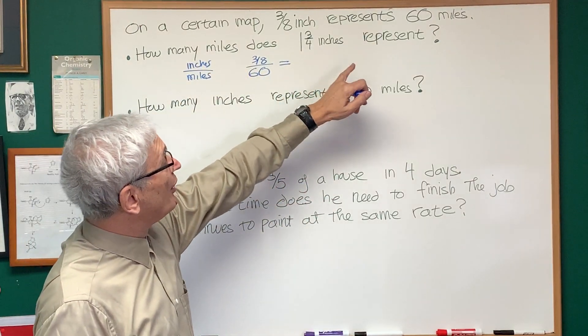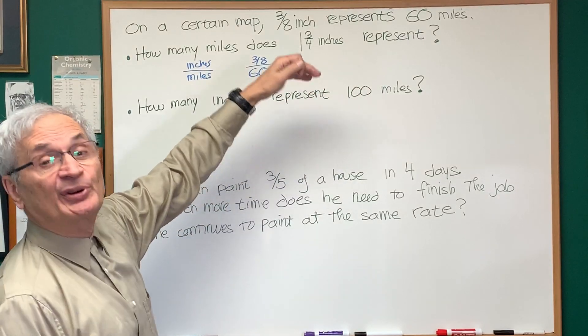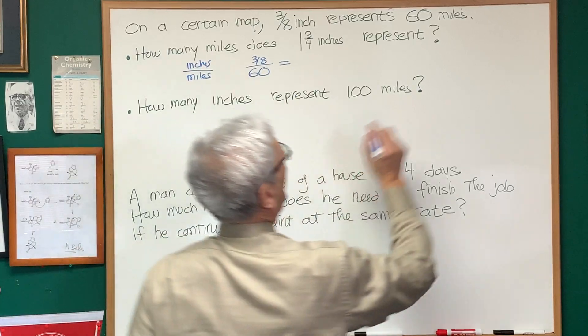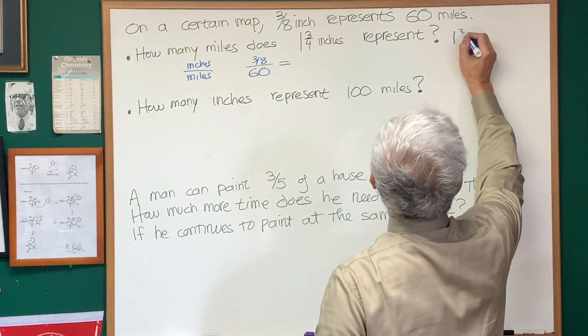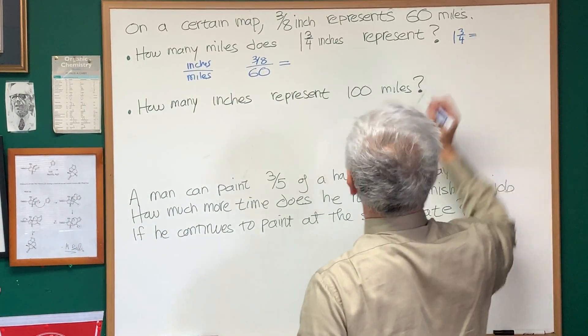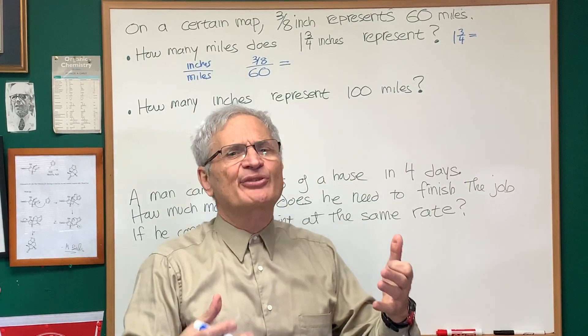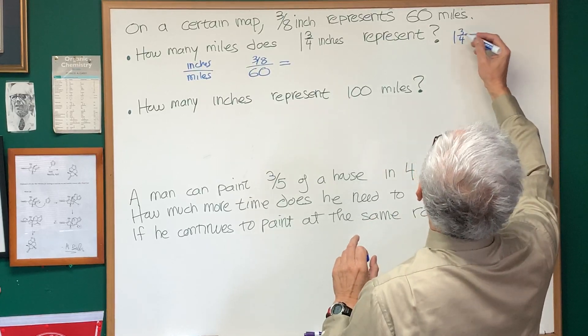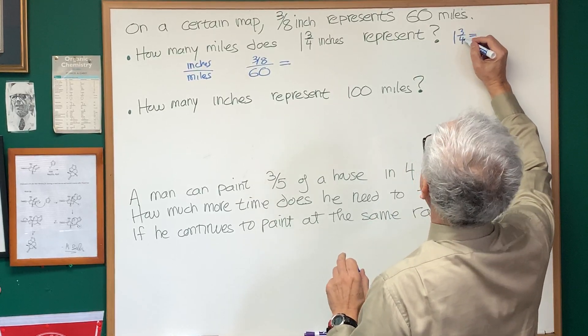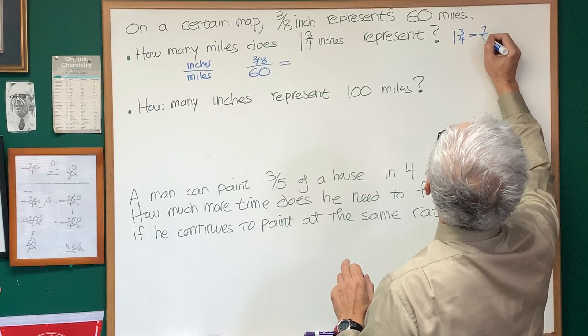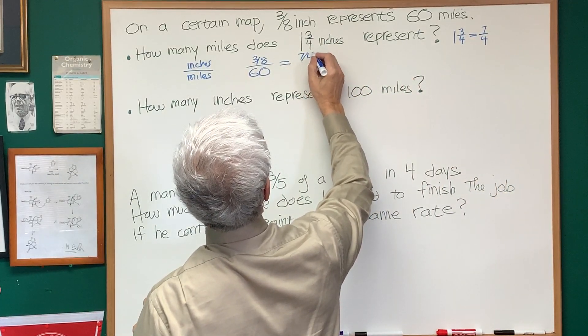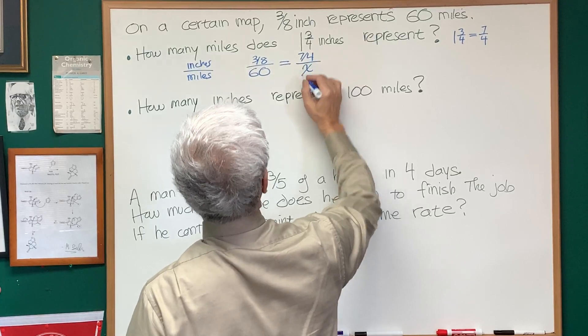How many miles does one and three-quarter inches represent? Well, we're going to put inches in the numerator and figure out what miles is in the denominator. Instead of converting to decimals, it's easier to use fractions. If you have an opportunity to stay with fractions, it often is much quicker. So this is going to be one times four is four plus three is seven, seven-fourths. So this is seven-fourths of an inch, and we do want to know how many miles.